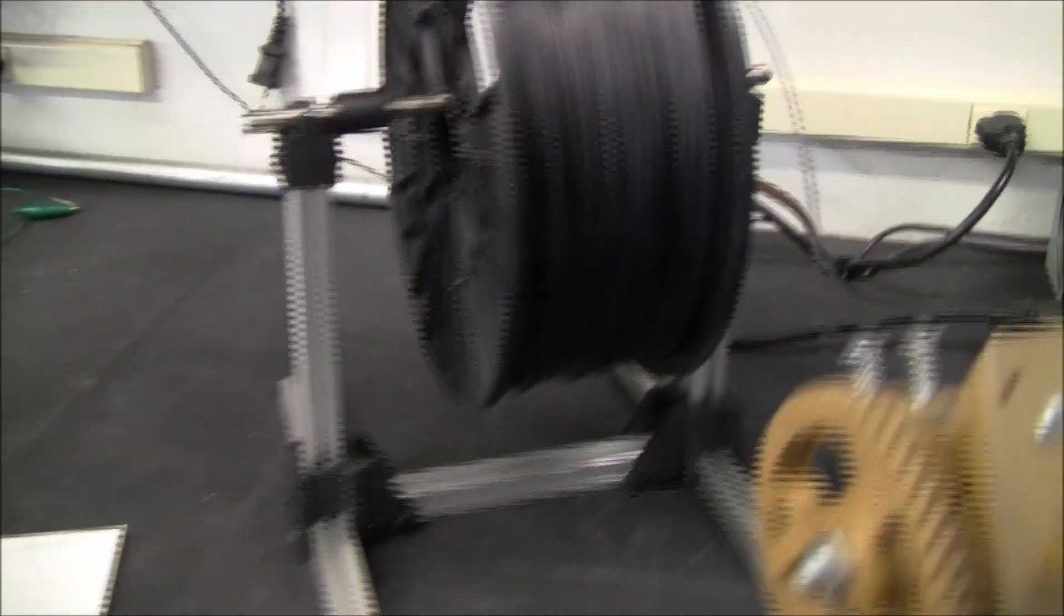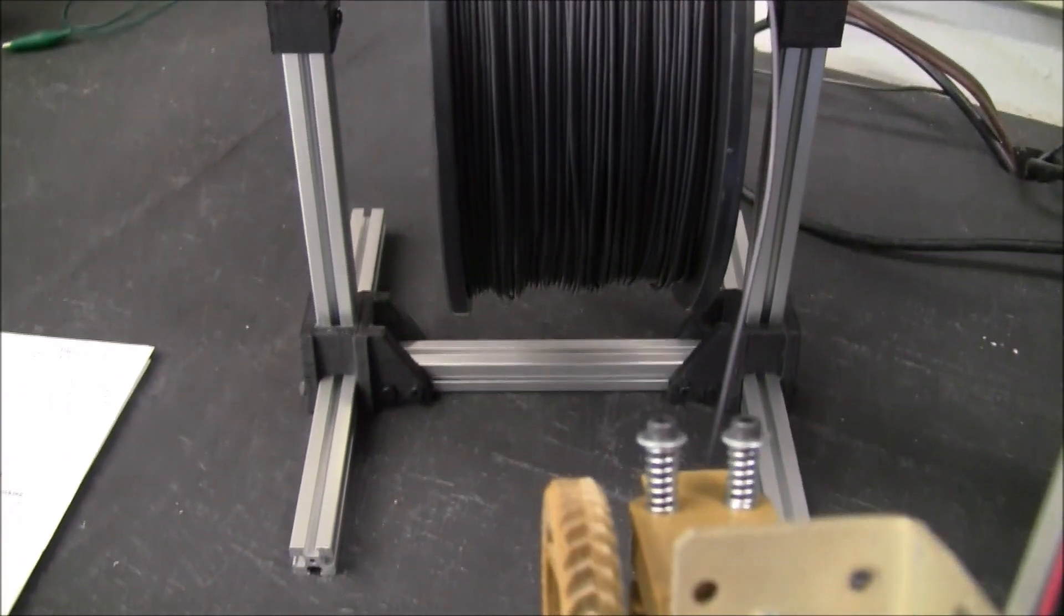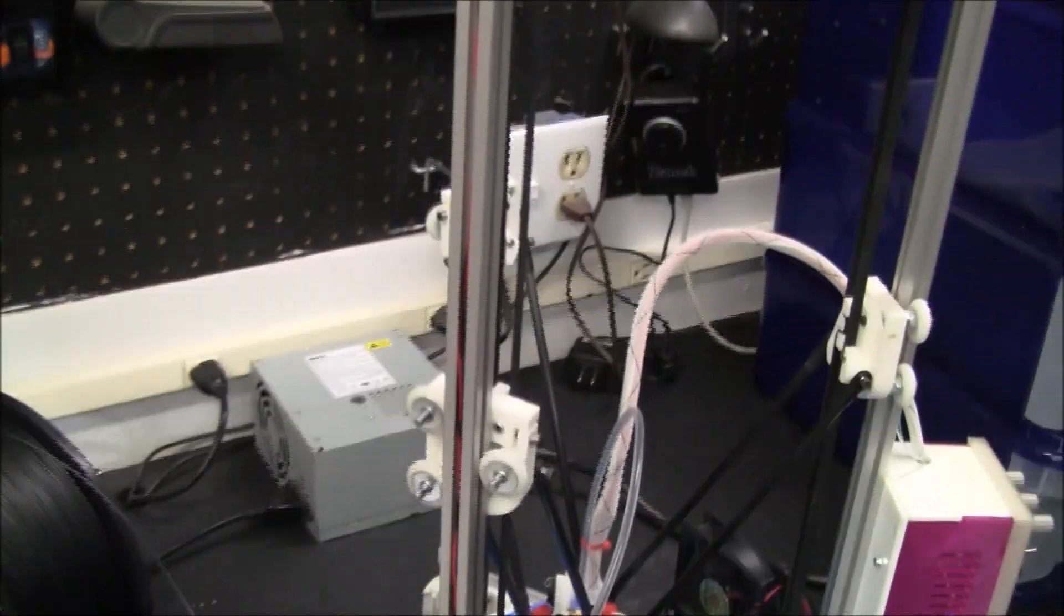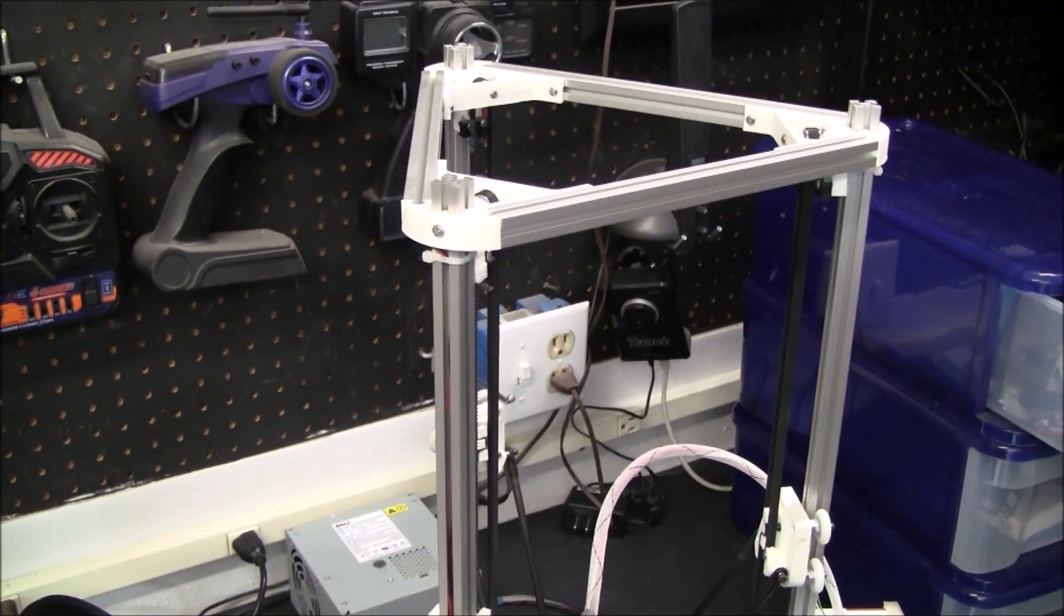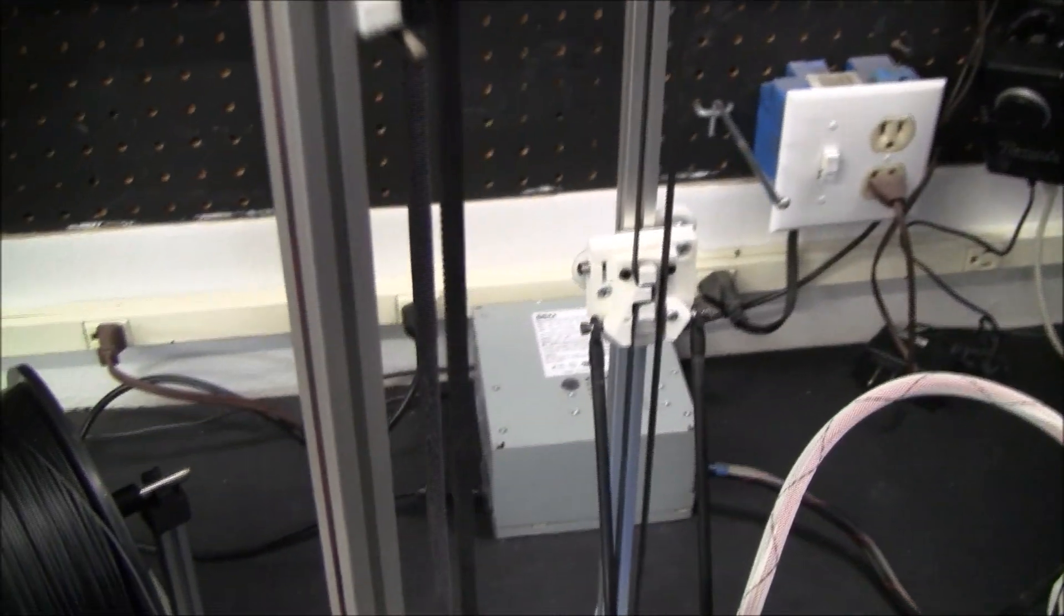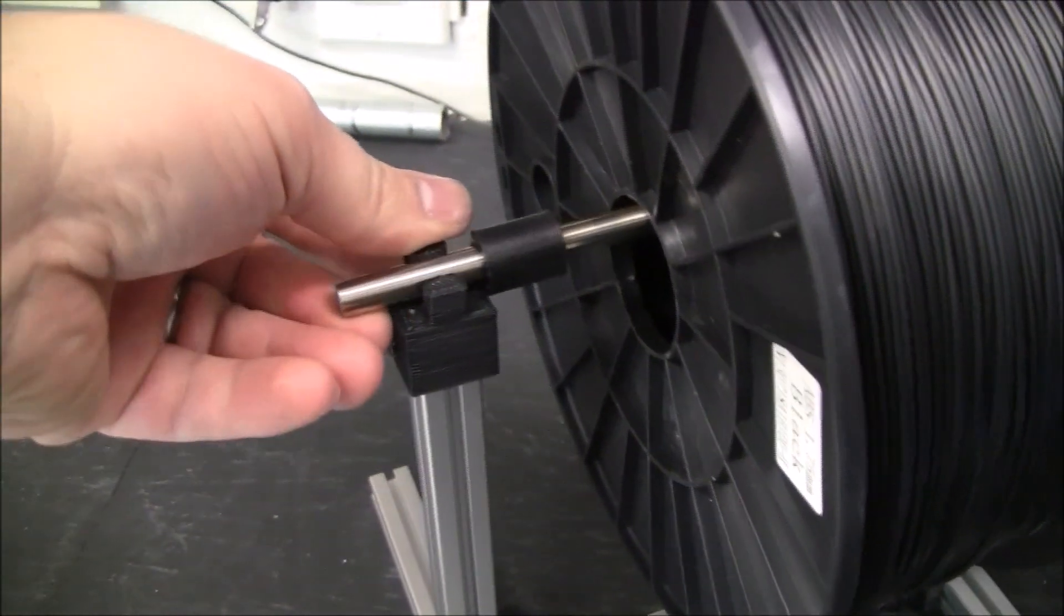Another thing you never really think about until you actually need it is, how you're going to spool off your filament. So, here's a handy filament holder that uses the same extruded aluminum. It's a 15 by 15 millimeter extruded aluminum from Misumi.